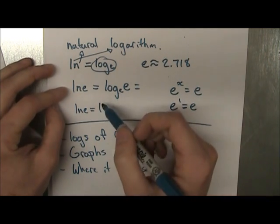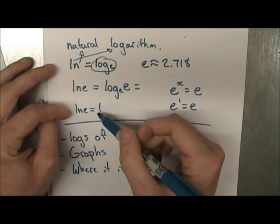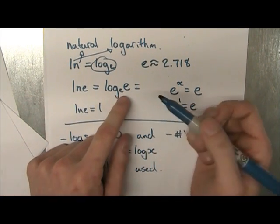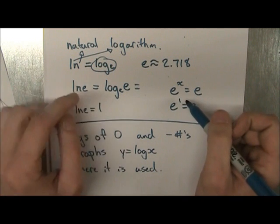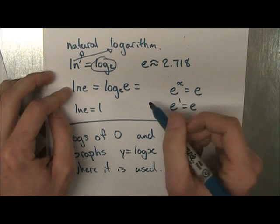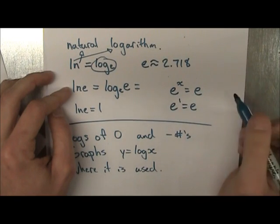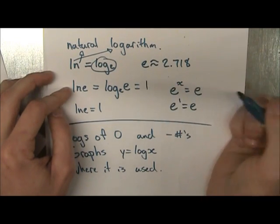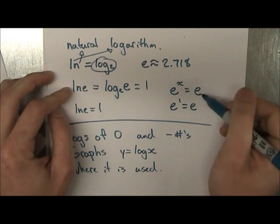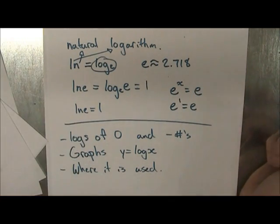And we did an example. If we take ln of e, well, that's the same thing as having log base e of e. And we know when the argument and the base are the same, the answer to the logarithm is 1. Because e to the power of what is equal to itself? Well, it has to be 1.